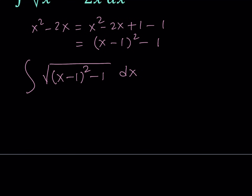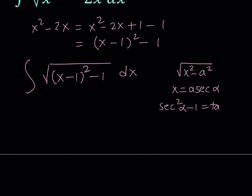Now to integrate this, notice we have a radical and inside it we have something that looks like the square root of x squared minus a squared. When you have an expression like this you can always use trigonometric substitution. For example you can replace x with a times secant alpha. That gives you secant squared minus 1, which is equivalent to tangent squared alpha — that famous identity from the Pythagorean identity.